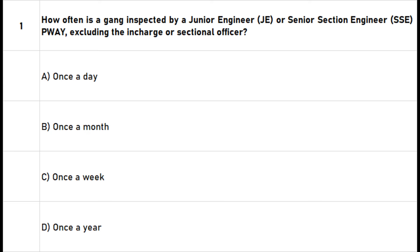Question 1: How often is a gang inspected by a junior engineer or senior section engineer P-Way, excluding the in-charge or sectional officer? A. Once a day. B. Once a month. C. Once a week. D. Once a year. The right answer is option C: Once a week.